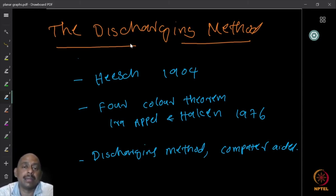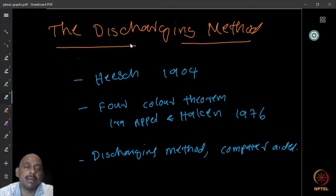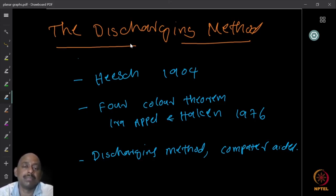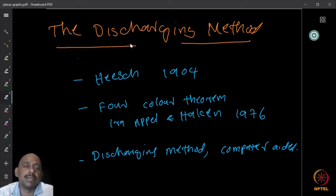So if you can come up with a proof without using computers, that would be great. The discharging method is so powerful it is apparently required to prove the four-color theorem, though we don't know for sure. All known proofs have used it. But this method is very powerful in the sense that it can be used to derive several structural properties of classes of graphs, including planar graphs. Not all applications of this method require computer help. We are going to see some simple examples and study this method. We don't have time to look at the full proof of the four-color theorem, but we will learn the technique used to prove it.